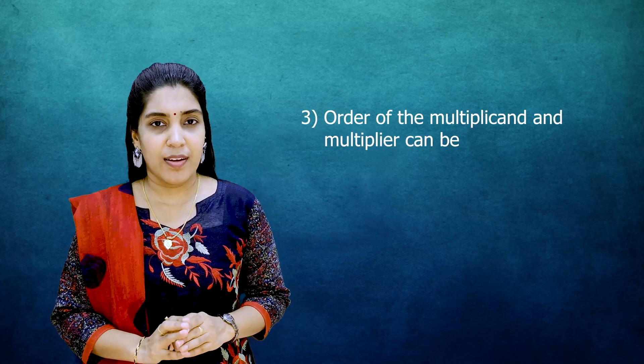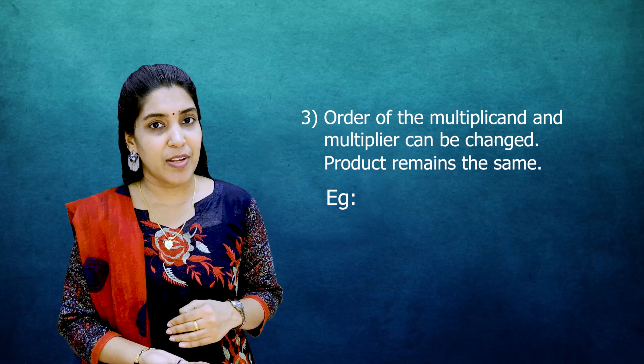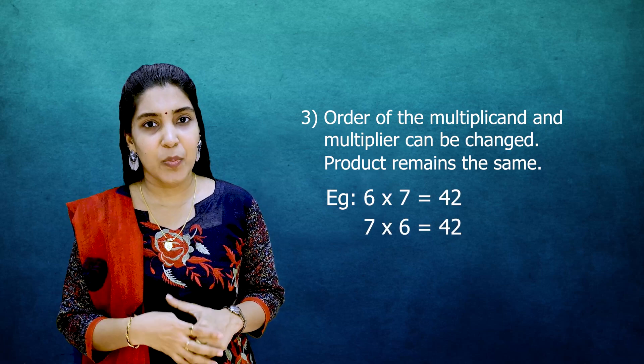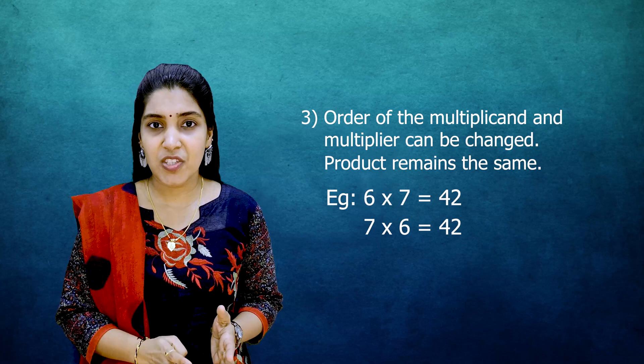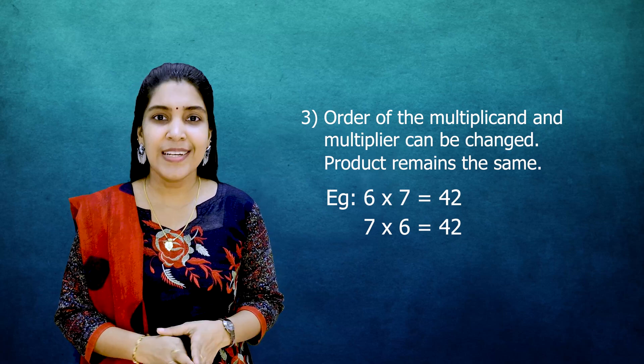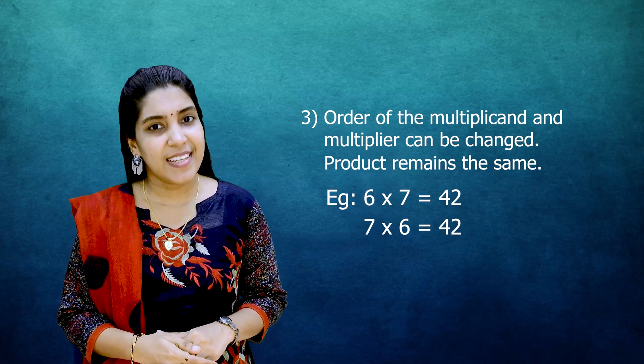Then next property: if we change the order. For example, 6 7s are how much? 42. Then what about 7 6s? 42. If we change the order, nothing will happen. The result will be the same.